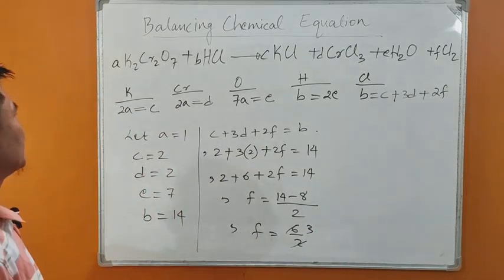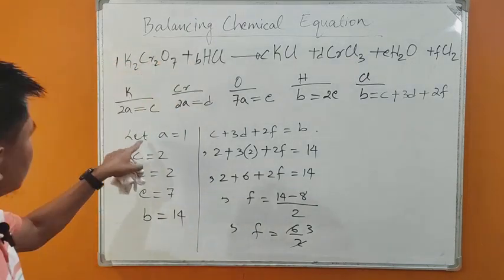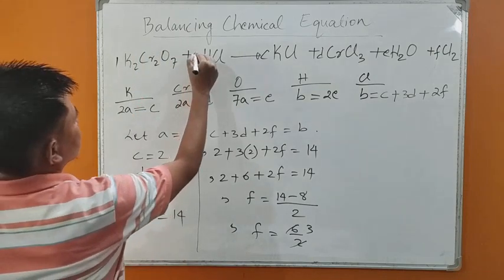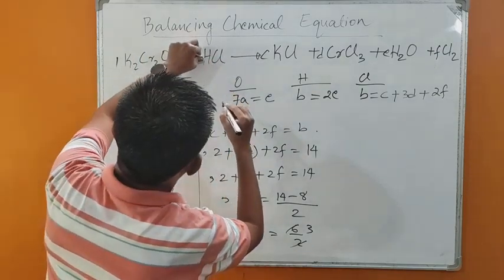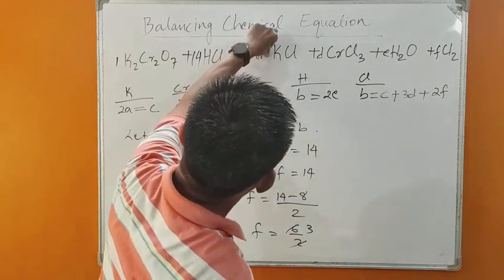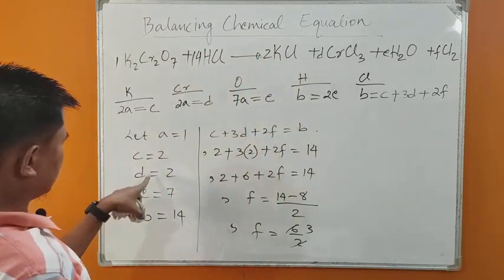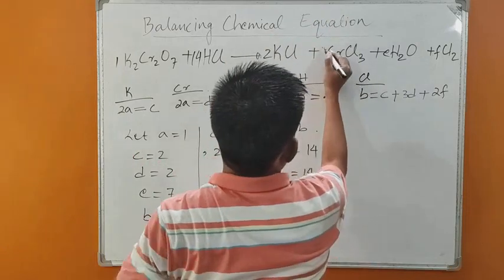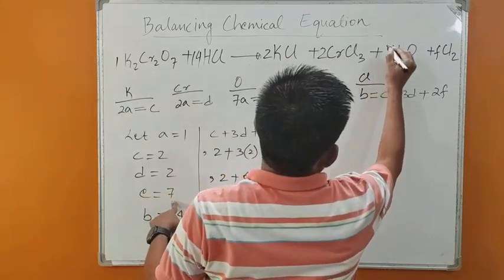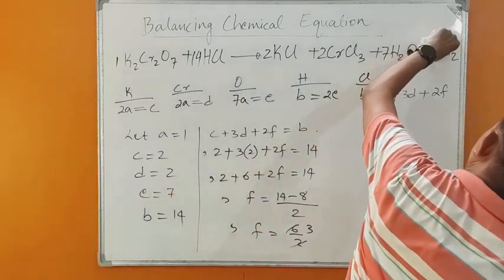Now everything is complete. Instead of A, write 1 — no need to write 1 if it's 1. Instead of B, write 14. Instead of C, write 2. Instead of D, write 2. Instead of E, write 7. Instead of F, write 3.